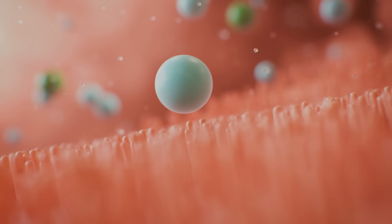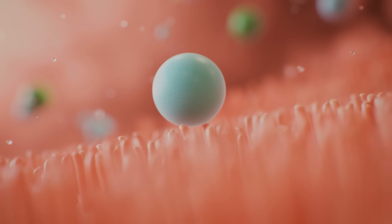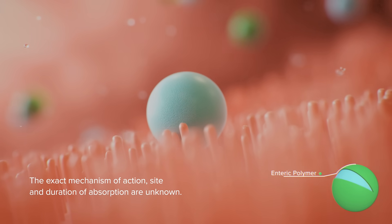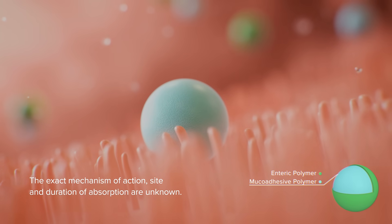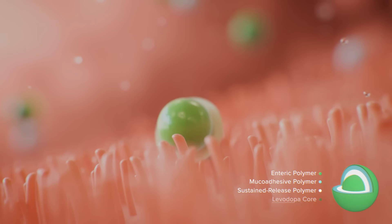While the immediate release granules inside Crexant dissolve quickly, working within one hour, the extended release pellets have a novel mucoadhesive polymer that is designed to adhere to the optimal area of absorption in the proximal small intestine and slowly release levodopa.